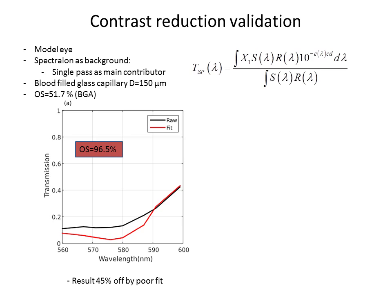Considering that we have a spectrum as a background, single-pass would be the main contributor for the transmission in this case. We fit the raw data to this expression, that will be single-pass only. And we obtained a really bad fit and an oxygen saturation that is completely off. It's 45% off, basically.